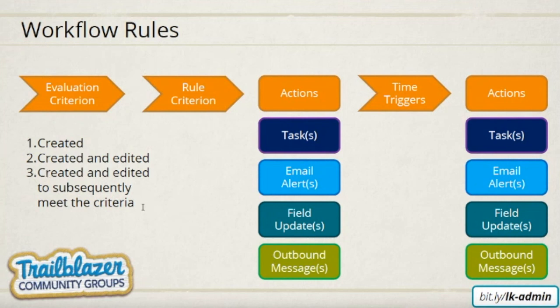So 'edited to subsequently meet' means the criteria was not satisfied before. Let's say your opportunity amount condition is 1000 — if the amount was only 800 and you then updated it to 1000 or more, in that scenario the actions will run. This will be satisfied only if the amount was not meeting the condition before and after your edit it then meets the condition. When you create the record, the first option runs only once.